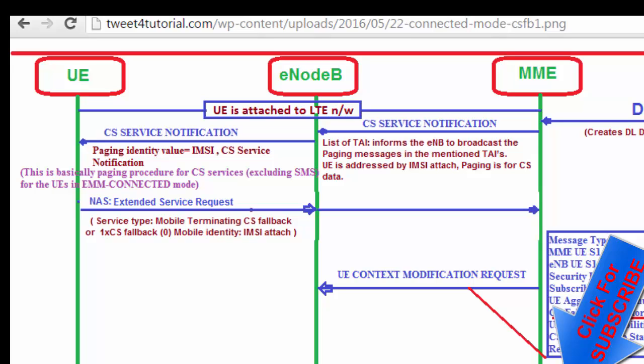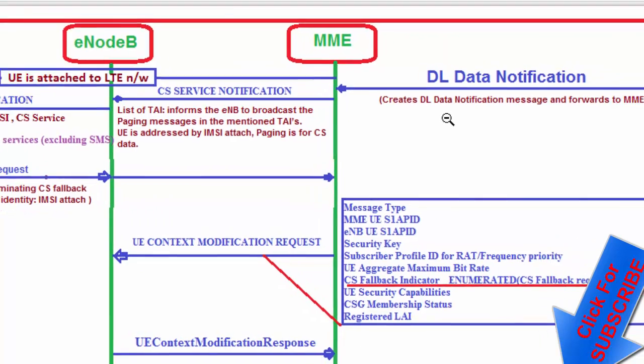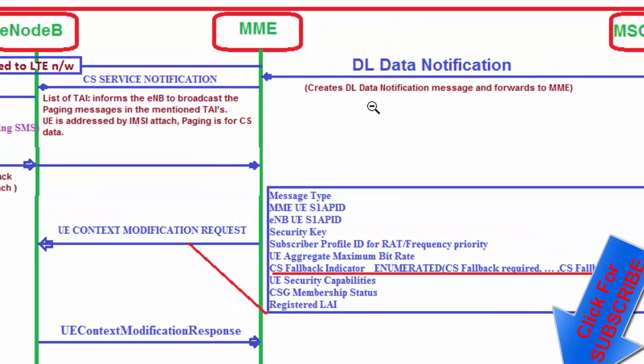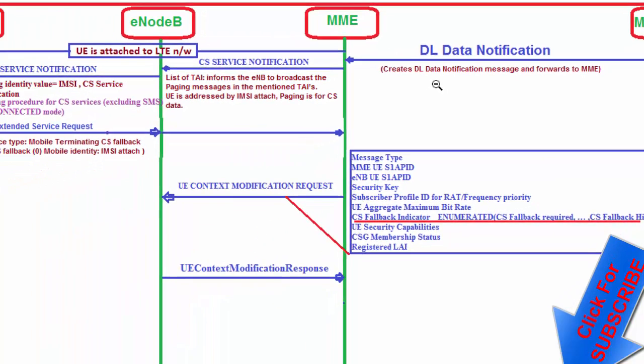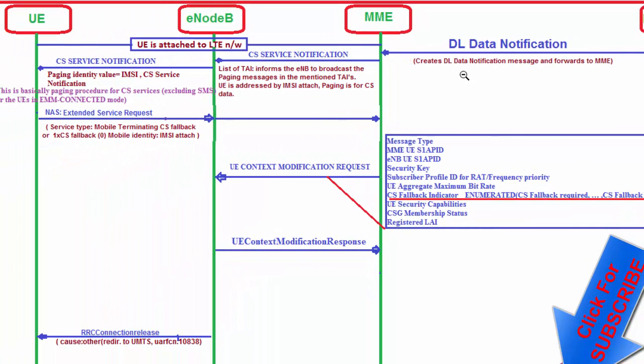The UE is in connected mode. After the UE receives the CS Service Notification message, the UE sends an Extended Service Request message to the MME via the eNodeB. The eNodeB does not know the purpose of this message and does not know what action will be necessary. The MME receives and reads the Extended Service Request message.